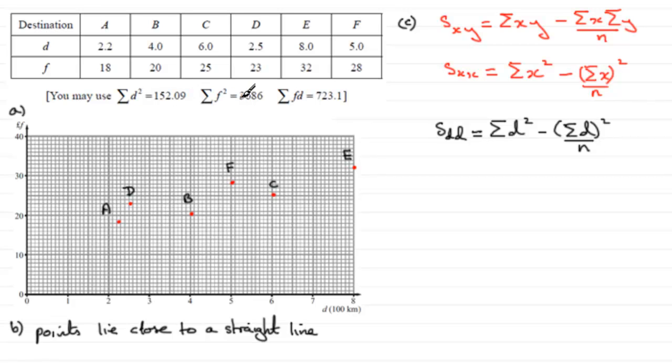Now we've got some summary statistics here. We've got Sigma D squared, that's good. But we need Sigma D, the sum of all the D values. So what you're going to need to do is add up 2.2, 3, 6, 2.5, 8 and 5. And if you do that, Sigma D, what you find you get is 27.7. So you're going to need that particular value.